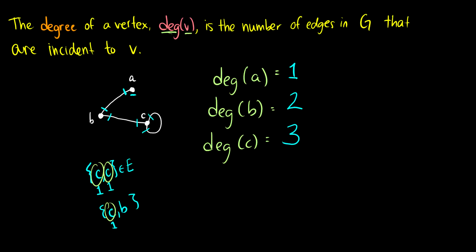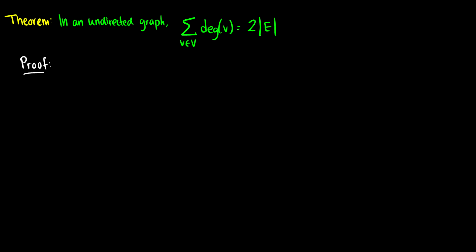If we take a look at the edge from a to b, we see that b is in the set of edges twice and a is in the set of edges once, so it corresponds to their degree. In an undirected graph, all of the degrees sum up to two times the cardinality of the edge set — two times as many edges is equal to the sum of degrees.